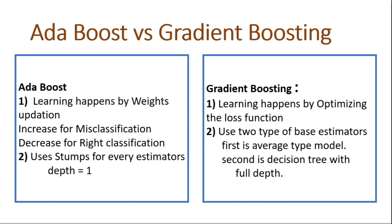Let's look at some differences between AdaBoost and gradient boosting. In AdaBoost, learning happens by weight updation — increased weight for misclassification and decreased weight for correct classification. When weight increases for misclassification, that sample gets a higher probability of being selected in the next succeeding model.